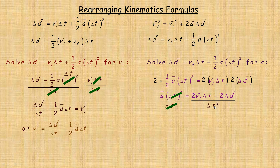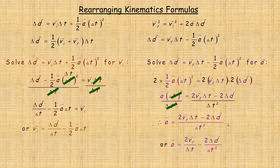So the next line: those 2s divide out and we get a times delta t squared equals 2 times the final velocity delta t minus 2 delta d. Now we're trying to solve for a, so we divide out this delta t squared — right now it's multiplied by a — so we divide both sides by delta t squared. This means the change in time squared. There are two ways to write this formula. One way: a equals 2 final velocity times delta t minus 2 delta d, all over delta t squared. Another way: you could write 2 final velocity delta t over delta t squared, so the delta t in the numerator divides with delta t squared, leaving just a delta t in the denominator — giving 2 delta d over delta t squared.